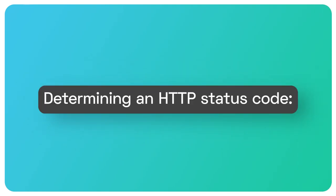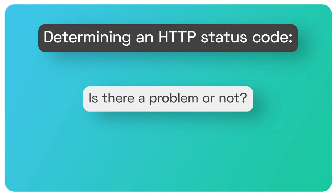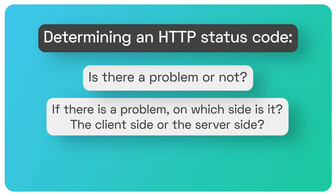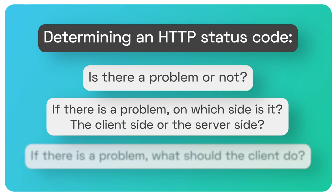You can fulfill this principle by giving answers to three questions. Is that a problem or not? If there is a problem, which side is it on — the client side or the server side? And if there is a problem, what should the client do? In general, these principles apply to all status codes.